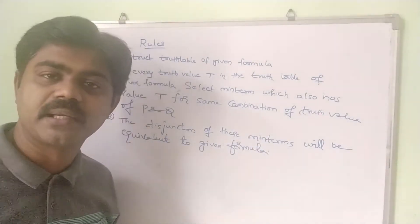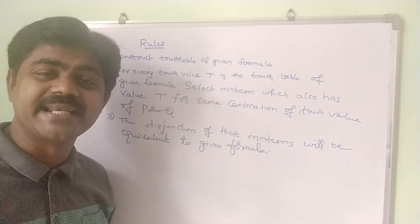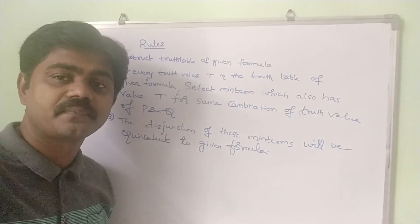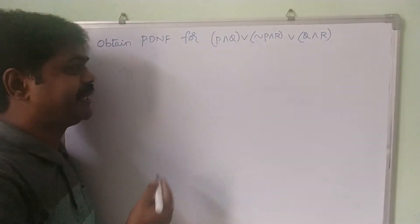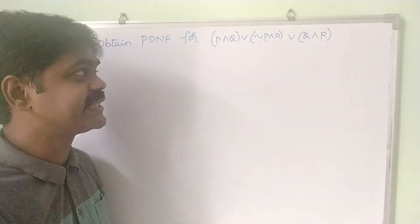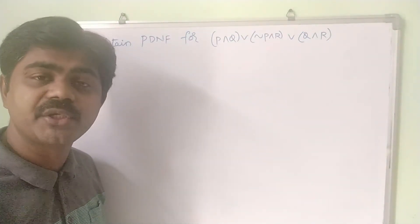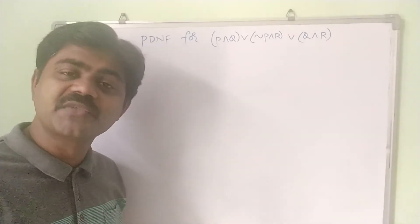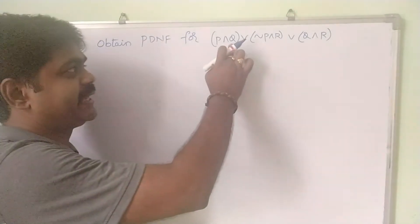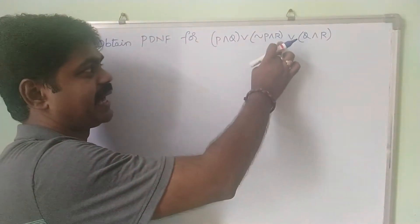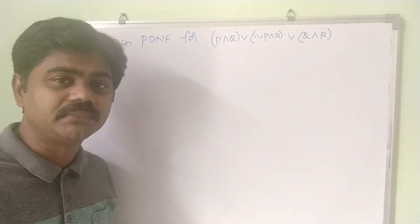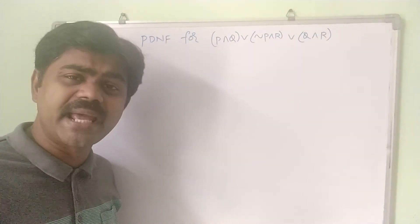Let's look at an example to get a clear idea about PDNF. The formula is (P∧Q) ∨ (¬P∧R) ∨ (Q∧R). First, we count the variables: P, Q, R — three variables, so we need 8 truth values.